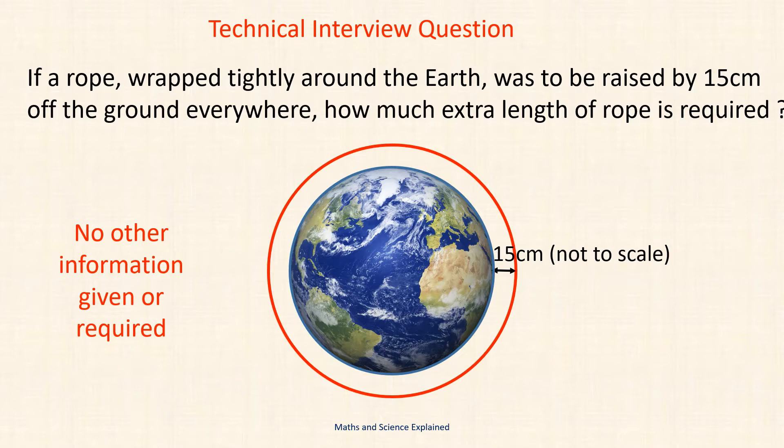Imagine that there's a rope wrapped tightly around the circumference of the earth. Now if we wanted to raise the height of the rope by 15 centimeters off the ground all the way around the circumference, how much extra length of rope is required? If you wish to give it a go then please pause the video. As a clue I will say that you do not need to know the dimensions of the earth but merely to assume it's a spherical object.